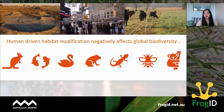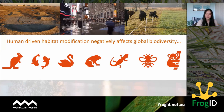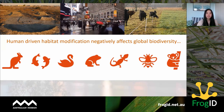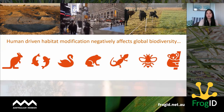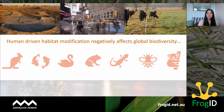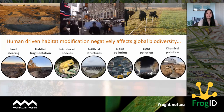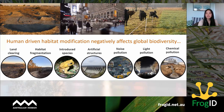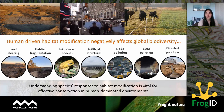It should come as no surprise that human-driven habitat modification negatively affects global biodiversity. It can lead to population declines, species extinctions, and it can drastically change species assemblages. Human modified environments are often really tricky places for species to live in because there are all sorts of selective pressures — land is cleared and fragmented, there are introduced species, artificial structures, and often really high levels of noise, light and chemical pollution. So if we are to conserve biodiversity within these landscapes, it's really important that we understand how species respond to habitat modification.